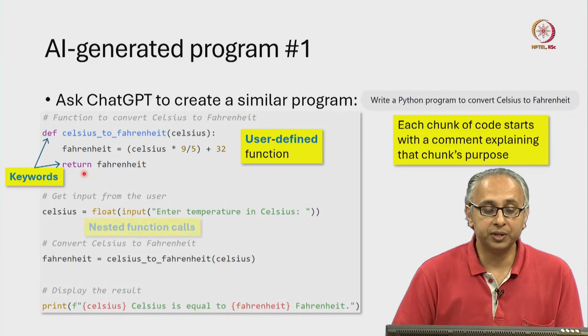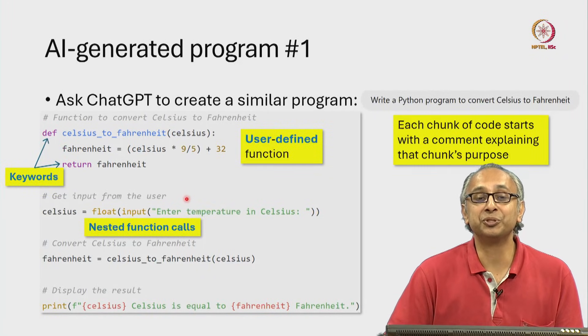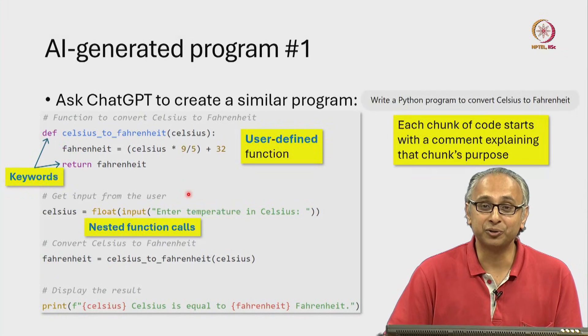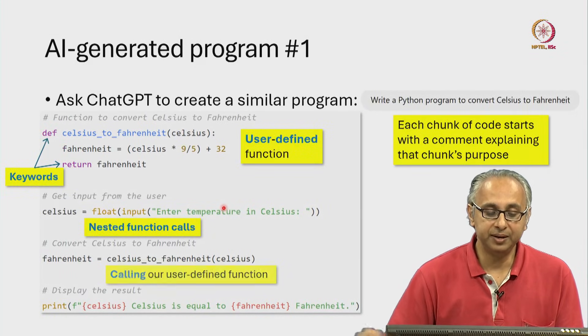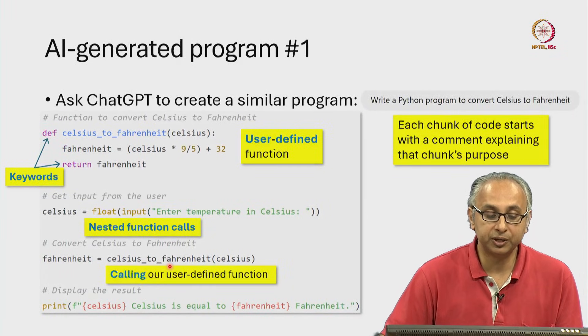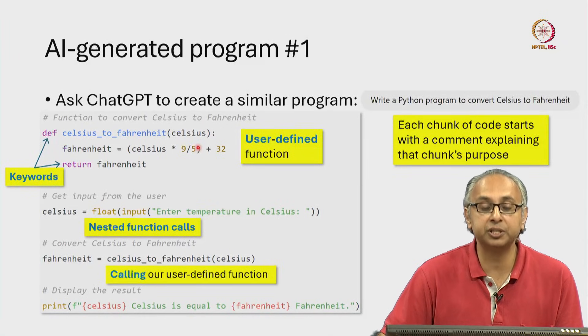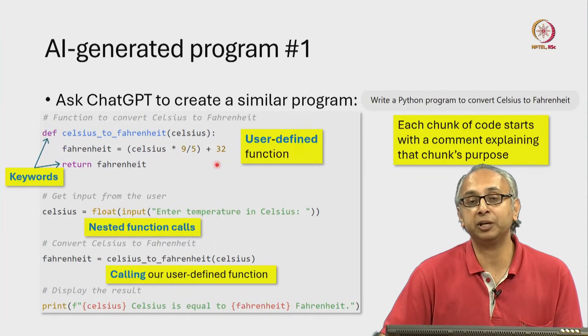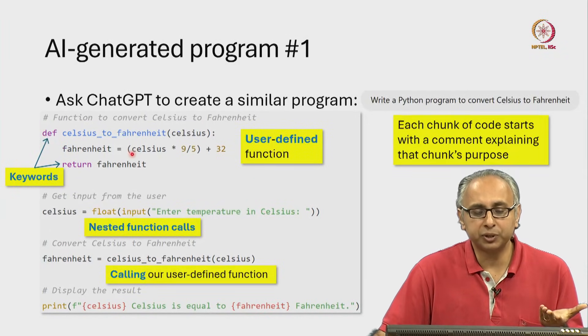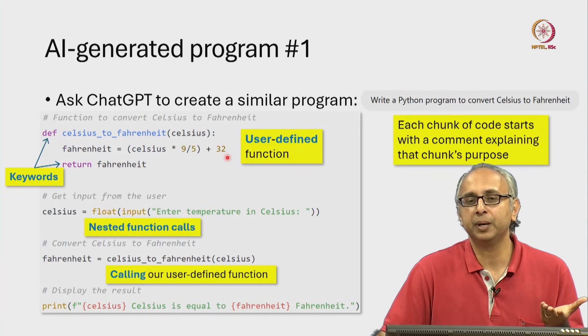Then, our AI generated code actually calls the user defined function to calculate the answer. We wrote a similar expression in our code, but the AI generated code has decided to put that calculation inside a function.